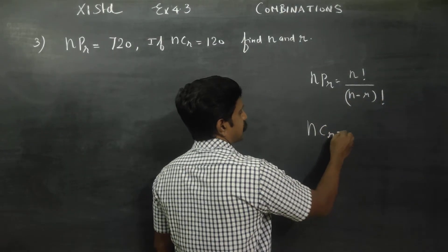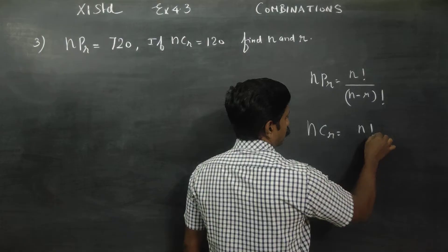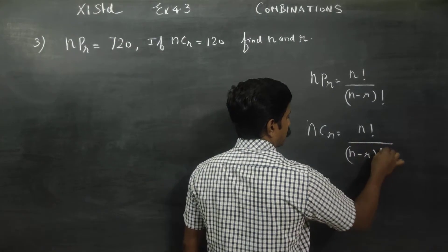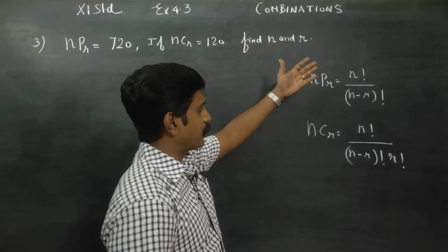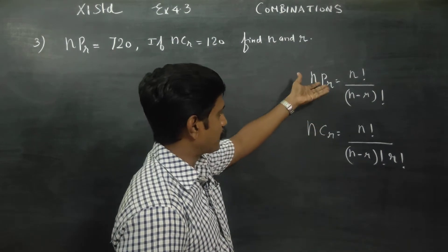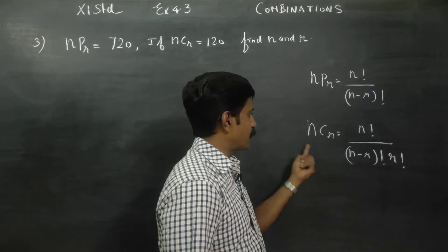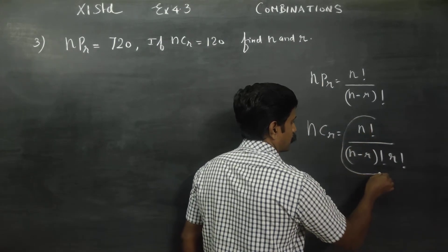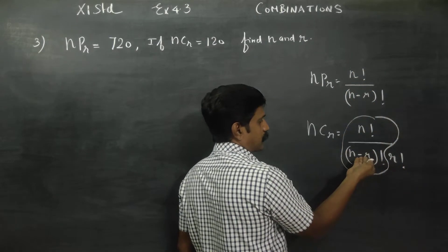The combination formula NCR is N factorial by N minus R factorial into R factorial. That is the NPR formula and that is the NCR formula. Note both the NPR formula and NCR formula carefully — the NCR formula has an extra R factorial in the denominator compared to NPR.